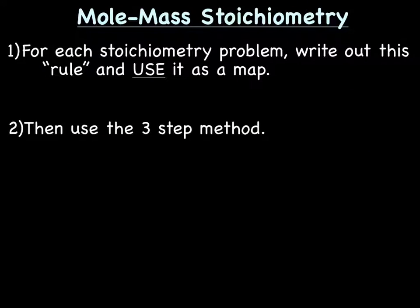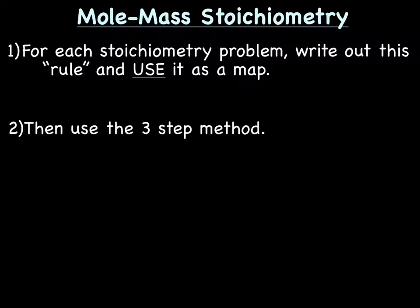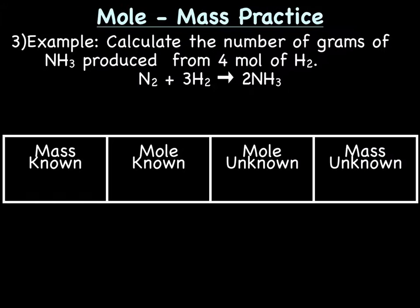Let's do some mole-mass stoichiometry. For each stoichiometry problem, write out the rule—mass known to mole known to mole unknown to mass unknown—and use it as a map. Then just use the three-step method that we've been using all along.